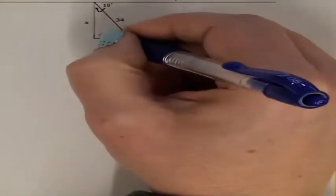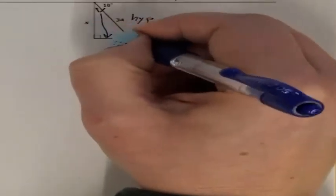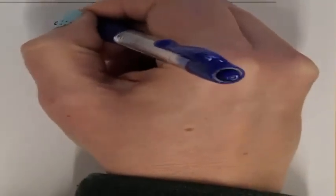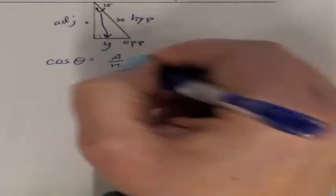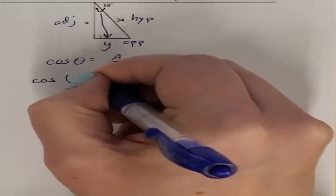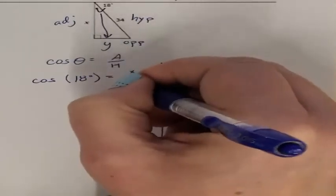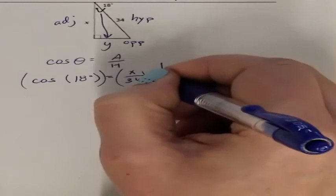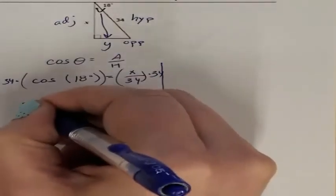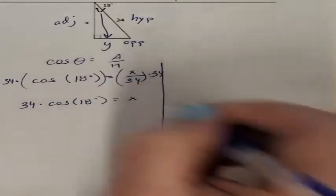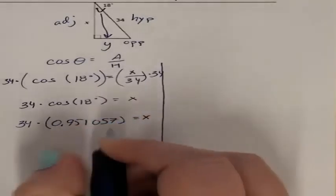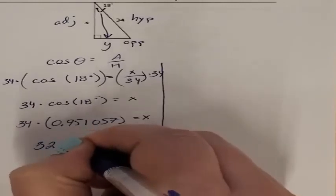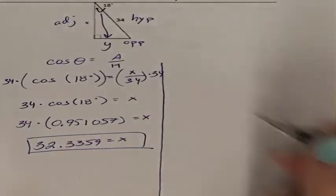Last problem. I know my hypotenuse because that's diagonal from the 90 degrees. I'm missing the Y opposite side and the X adjacent side — two missing sides, two problems. I know my hypotenuse and I want my adjacent, so adjacent and hypotenuse is cosine. Cosine of 18 degrees equals X over 34. Multiplying both sides by 34, I have 34 times cosine of 18 degrees equals X. Cosine of 18 degrees is 0.951057, and multiplied by 34 gives me 32.3359 as my missing X value.